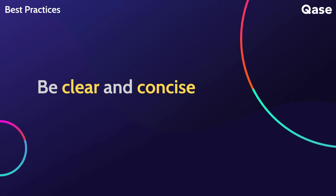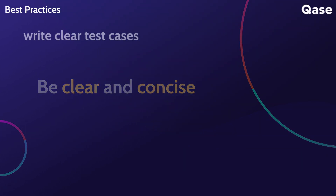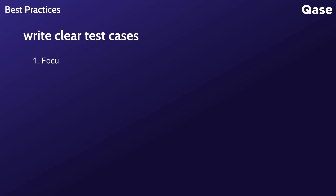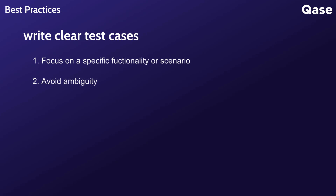Write clear and concise test case steps. Each test case should focus on testing a specific functionality or scenario. Avoid ambiguity to make it easy for others to understand and execute the tests. Clearly state any preconditions or assumptions necessary for the test case to execute successfully, as this will help set up the test environment properly.